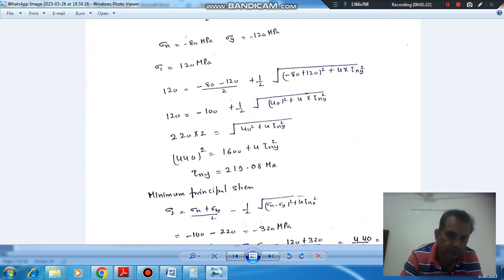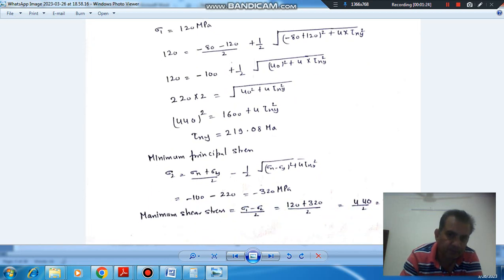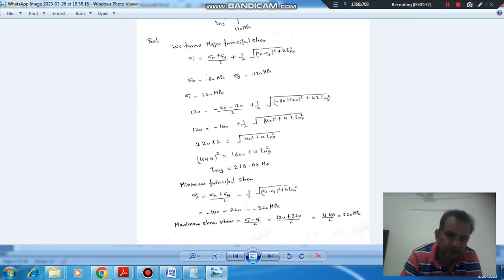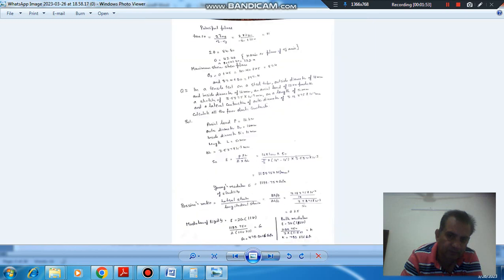And minimum principal stress, we can take minus sign here and use the value of Tau XY that we have obtained. So minimum principal stress comes as minus 3.15 MPa. Maximum shear stress is Sigma 1 minus Sigma 2 by 2. So Sigma 1 is 120 and Sigma 2 is minus 3.20 MPa. So maximum shear stress will be 120 plus 3.20 by 2, that is 4.40 by 2, which is 2.20 MPa.